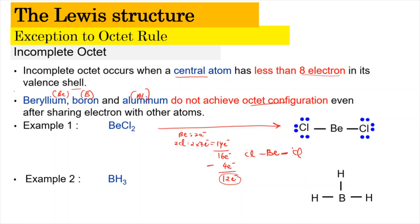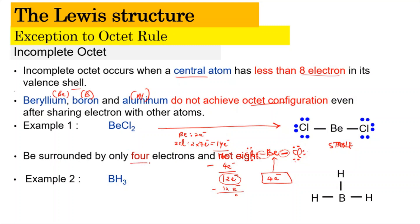The remaining 12 electrons will be used to give electrons to the terminal atoms. We place 6 on each chlorine: 1, 2, 3, 4, 5, 6 on one side, and 1, 2, 3, 4, 5, 6 on the other — using up all 12 electrons. As a result, each chlorine has 8 electrons. But beryllium at the central atom only has 4 electrons — 2 on the right and 2 on the left. Even though it has only 4 electrons, it is stable because it follows the incomplete octet, not the normal octet rule. The beryllium is surrounded by only 4 electrons and not 8.